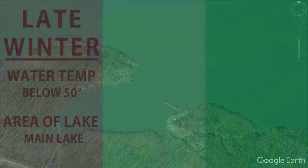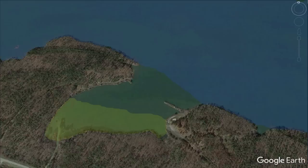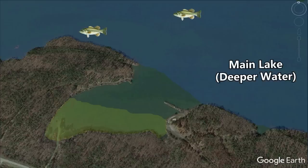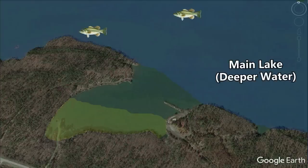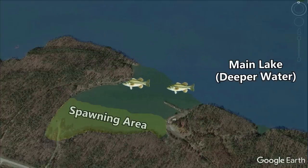Leading up to the pre-spawn we have the late winter period. I normally think bass are still in their late winter patterns when water temperatures are between 45 and 50 degrees. During this time bass are still living in or near the deepest water in their area because the water temperatures are cold and they're focused on feeding up for the spawn later in the year. Bass typically don't leave these deeper areas until water temperatures creep above the 50 degree mark, but then as water temperatures warm up bass will start moving towards their spawning areas.